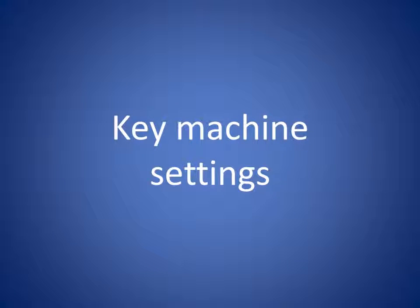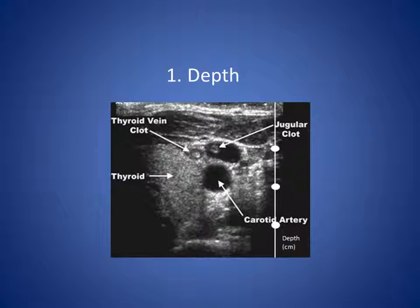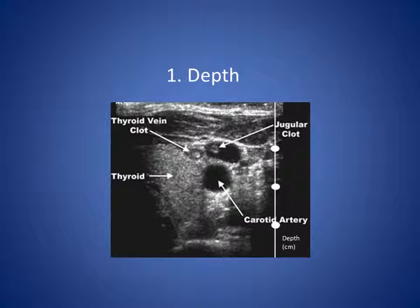We'll consider the two key machine settings used in ultrasound-guided venous access. A depth indicator bar is a standard feature of the ultrasound display. As depth increases, resolution decreases, as the amount of sound energy absorbed increases the more tissue the wave passes through and reflections become progressively weaker. Reducing the depth setting has the effect of appearing to magnify the size of structures on the screen, while increasing the depth setting diminishes them.